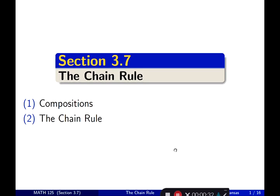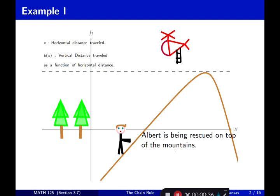Example one: there's a story. Albert is being rescued on top of the mountains. A chopper is out there trying to figure out what time they should come down to drop the ladder and get Albert. Albert is running fast because there are wild animals down on the island, and the mountain is steep. As he climbs, he travels horizontally some distance and also vertically. X is the horizontal distance he travels.